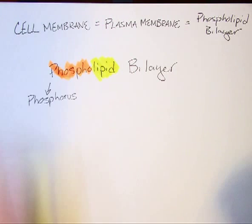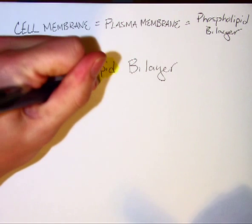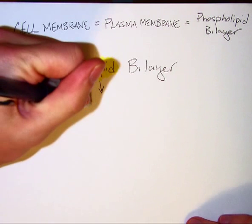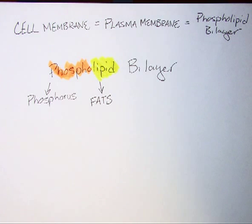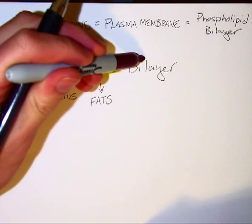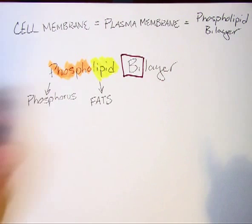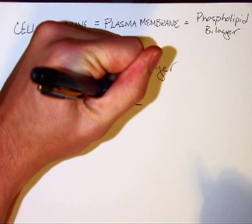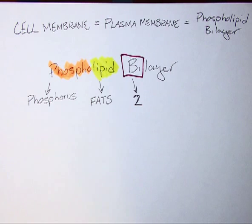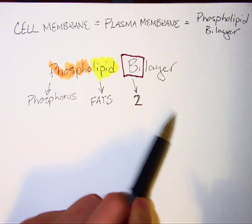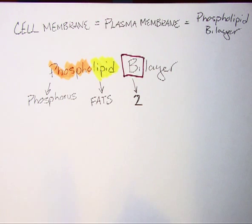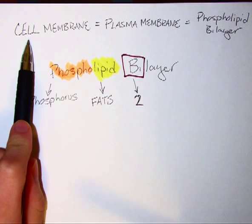Lipid is a new term — it's a macromolecule, and lipids refer to fats. So oils, cheeses, waxes — those are all lipids. Then 'bi' refers to two, like a bicycle, and 'layer' is self-explanatory. So phospholipid bilayer means phosphorus fats, two layers — two layers of phosphorus fats is what the cell membrane is made of.